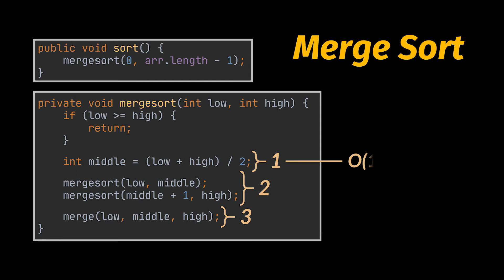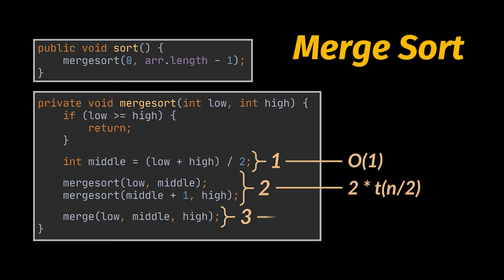Step one — calculating the middle index — has a constant complexity of O(1). Step two calls merge sort twice on each half. Since we're finding the complexity of merge sort as a function, each call takes T(n/2), and because it's called twice, the total time for step two is 2·T(n/2). Step three merges the two halves by traversing every element, which in the worst case is n elements, giving O(n).